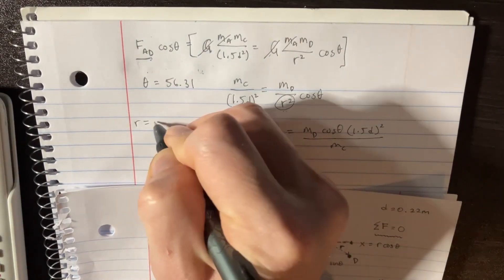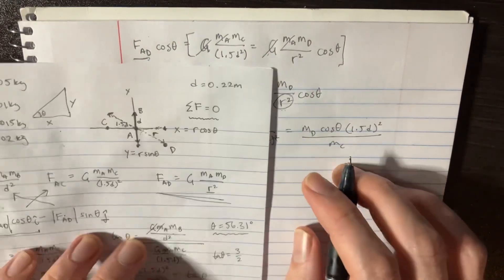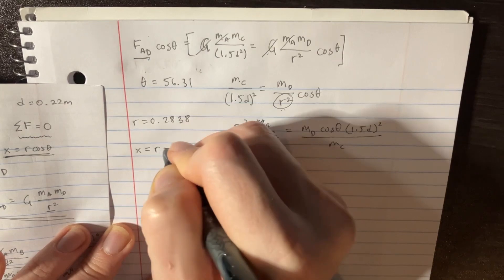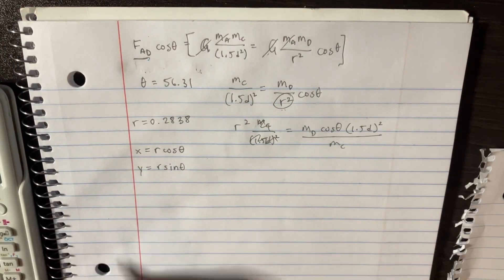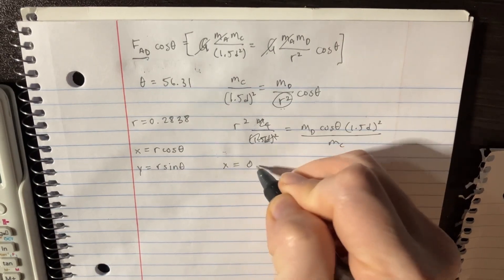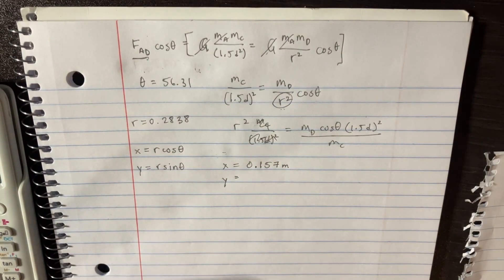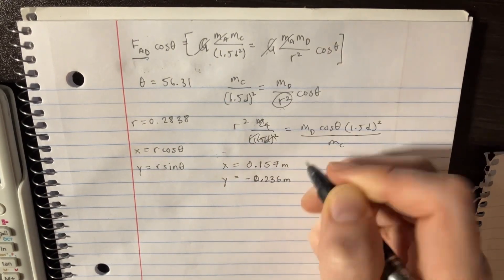Plugging into the calculator, R equals 0.2838 meters. Then from the equations we set up earlier: X equals R cosine theta and Y equals R sine theta. Plugging in R and theta equals 56.31 degrees, we get X equals 0.157 meters and Y equals 0.236 meters.